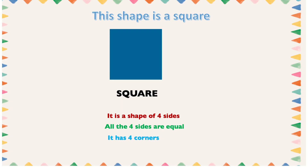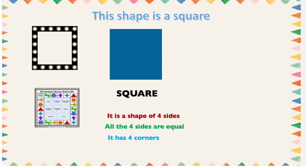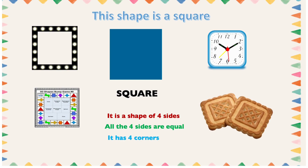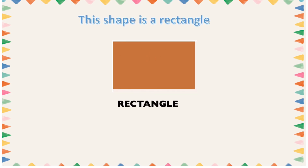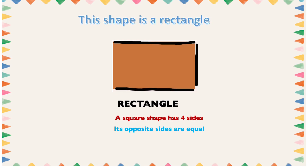Let's look at some objects with square shape — objects such as a frame, a playmat, a wall clock, and biscuits. All these objects have the shape of a square. This shape is a rectangle. A rectangle has four sides with its opposite sides equal: one, two, three, four.